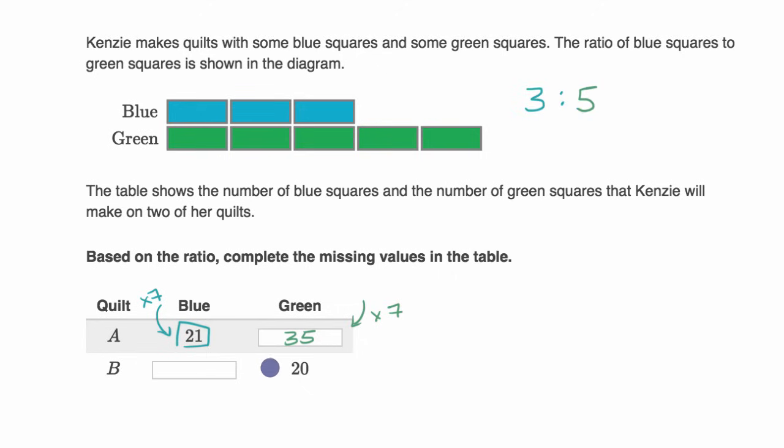Now we have a situation in quilt B, they've given us the number of green squares, so that's 20. Well, how do we get 20 from five? We would multiply by four. So if you multiply the number of green squares by four, then you would do the same thing for the number of blue squares. Three times four is going to be equal to 12. 12 blue squares for every 20 green squares is the same ratio as three blue squares for every five green squares.